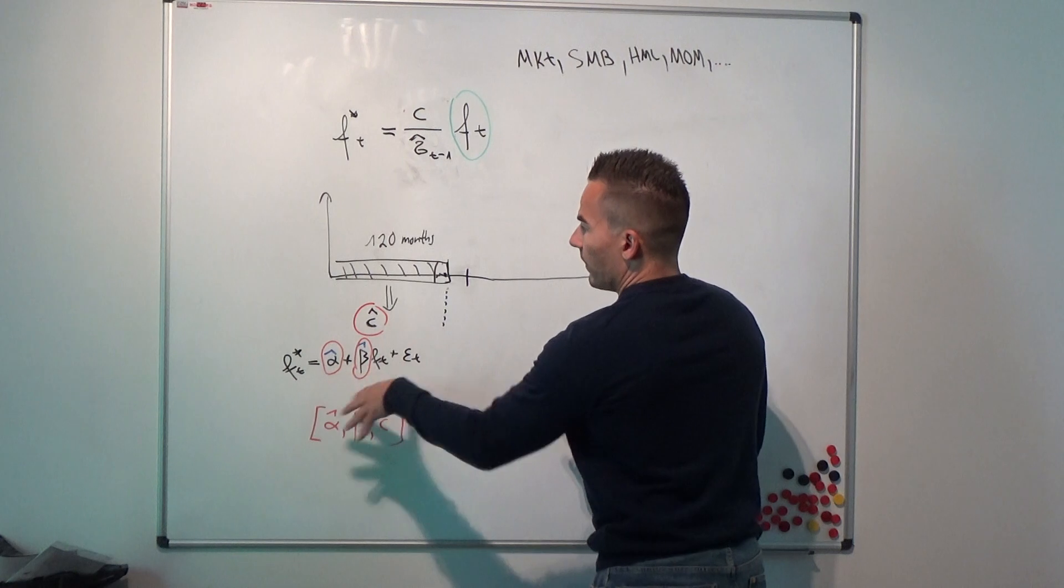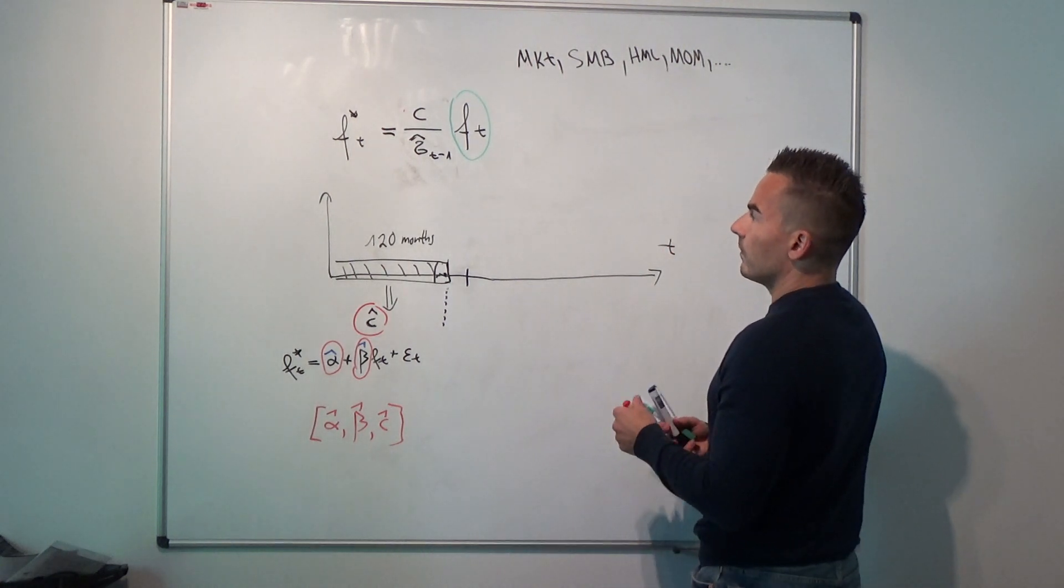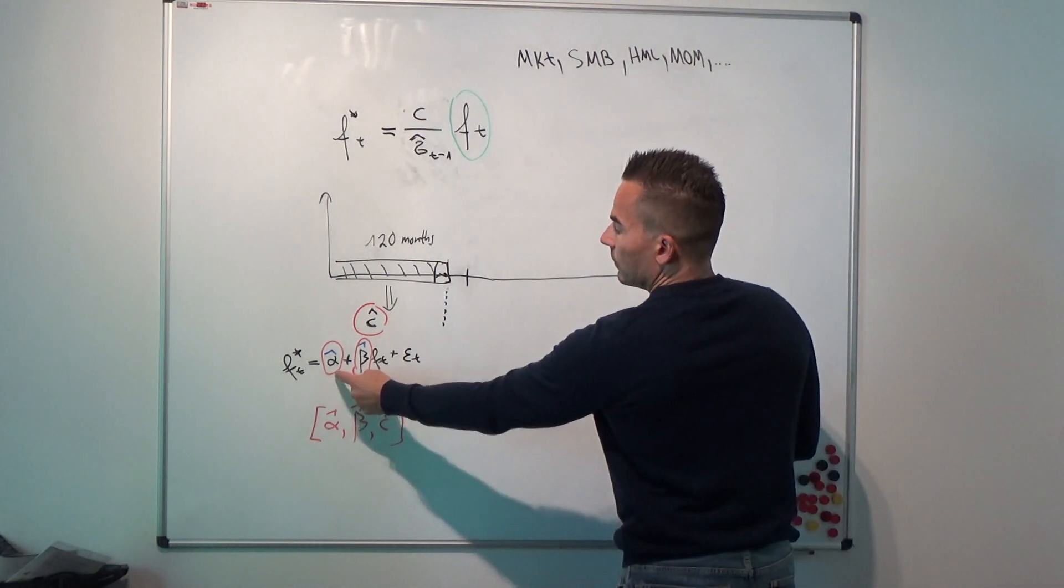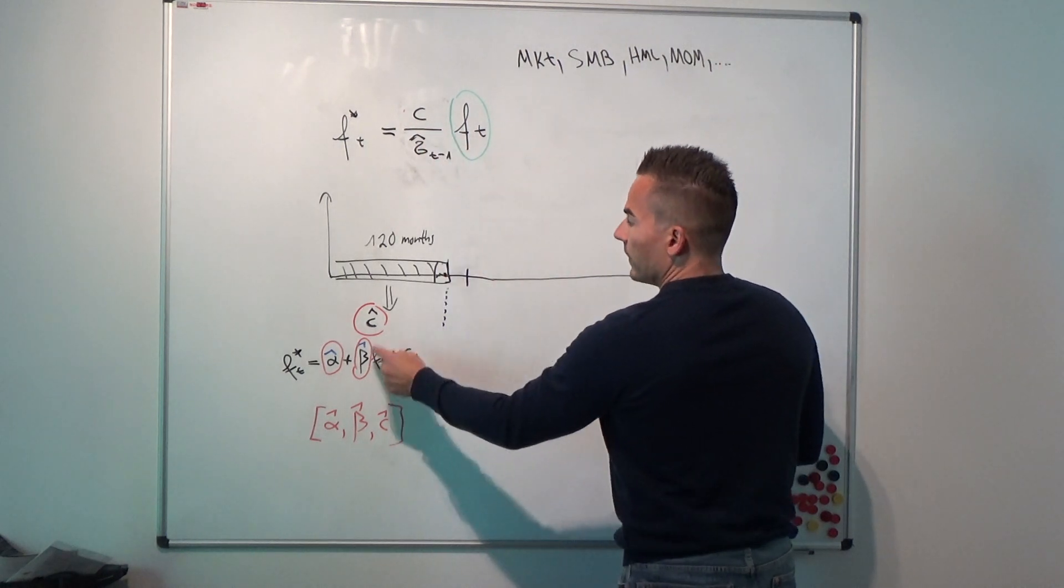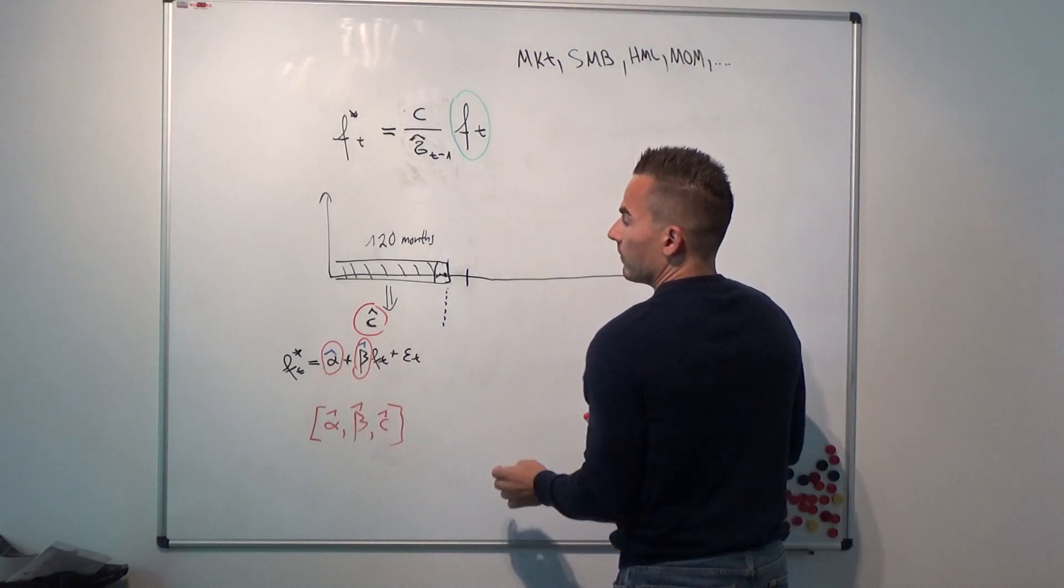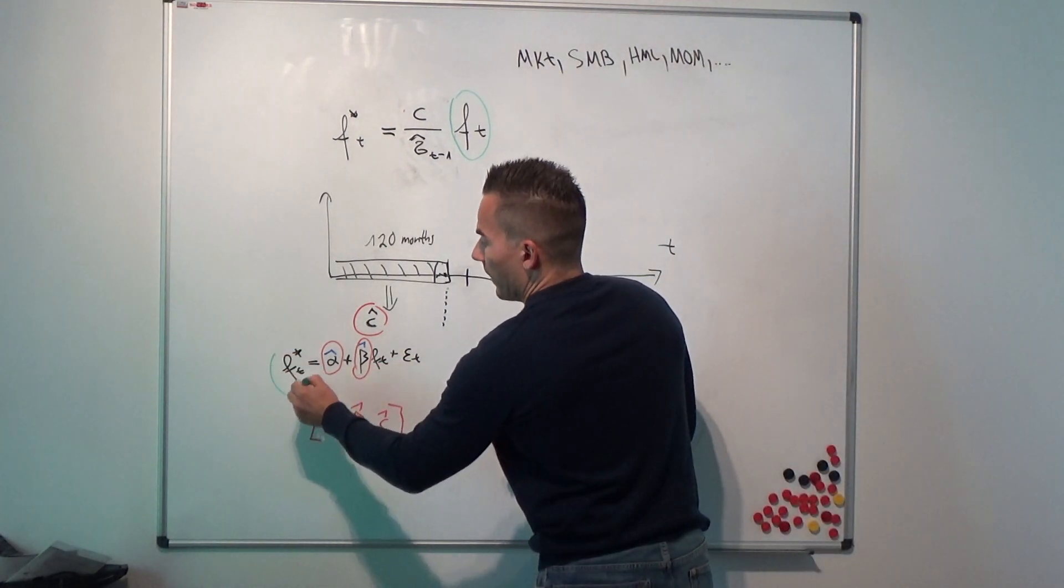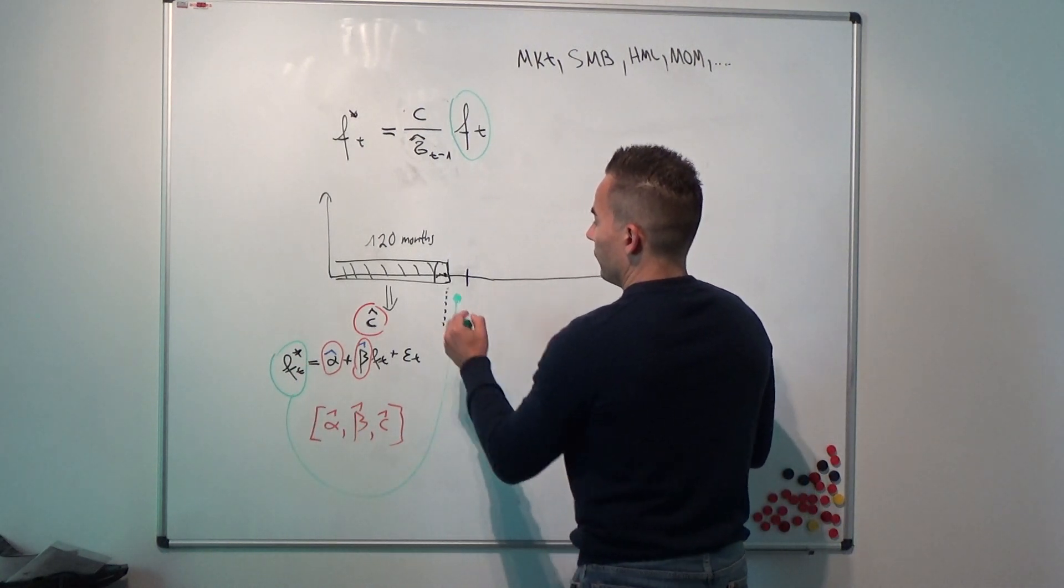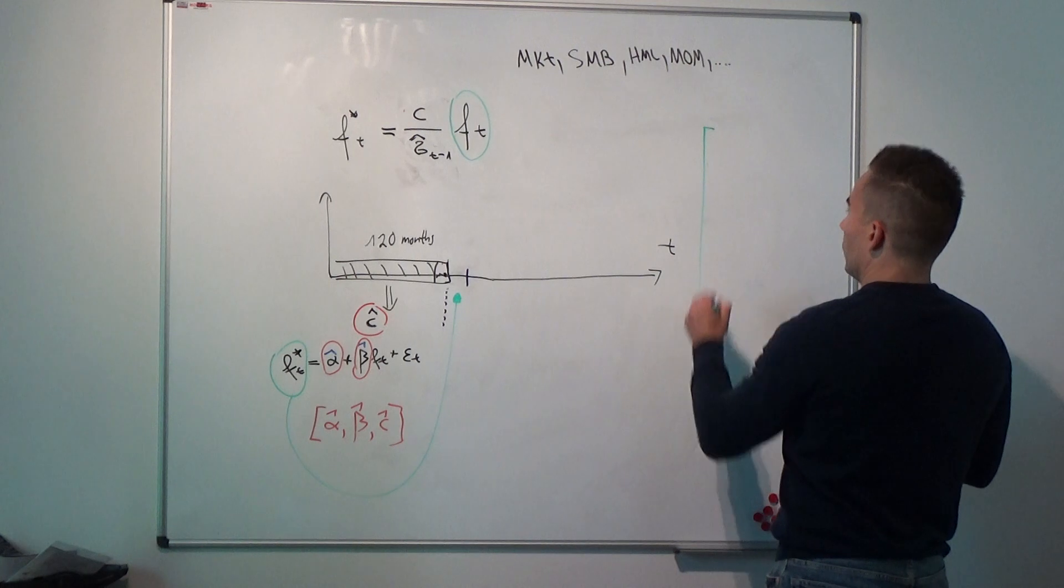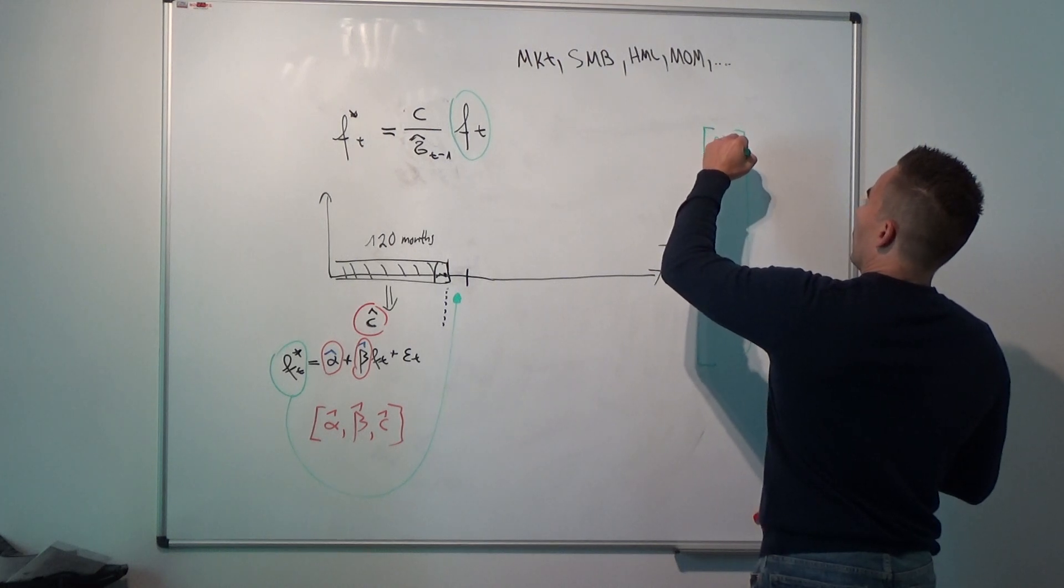Keeping all this constant here, based upon the estimates of our training period, we know that f-star t is then given by this equation here. This factor here, using the estimated c-hat from the training period, and then using this regression equation, we can determine the corresponding f-star t for that period. We stack this guy into the vector. This is our first observation out of the sample, f-star t-1.